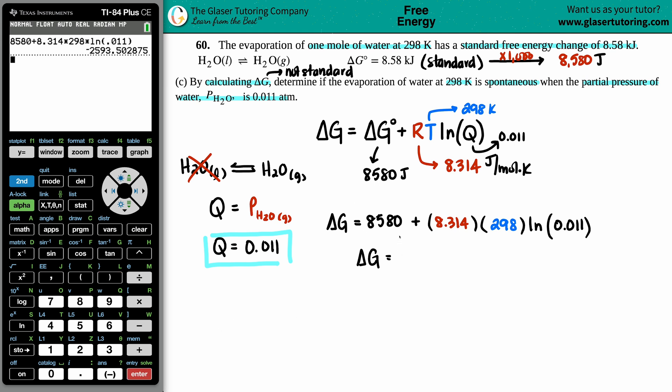8580 plus 8.314 times 298 times the ln of 0.011. I could close the parentheses, press enter, look at that. If we wanted sig figs, I guess we have roughly three sig figs, so my answer should be three sig figs. So negative 2590.